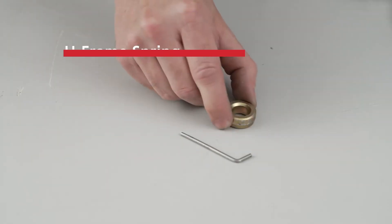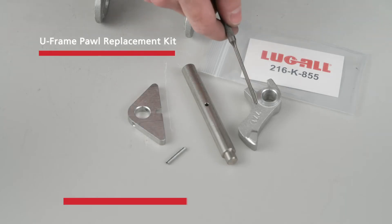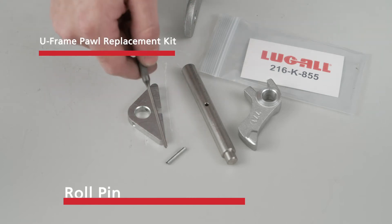Save the U-Frame Spring and Spring Support Roll. The U-Frame Pawl Replacement Kit includes a new U-Frame Pawl, U-Frame Pawl Shaft, Reversing Lever, and Roll Pin.